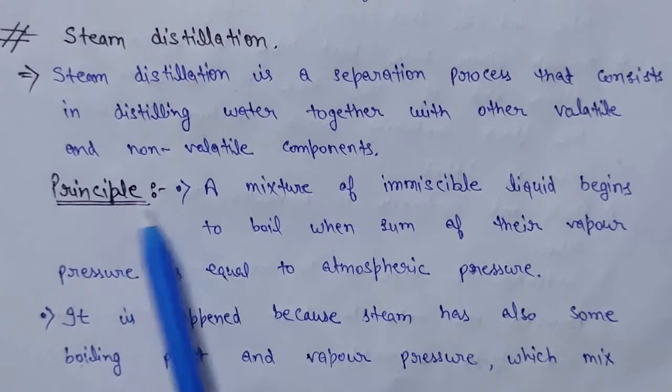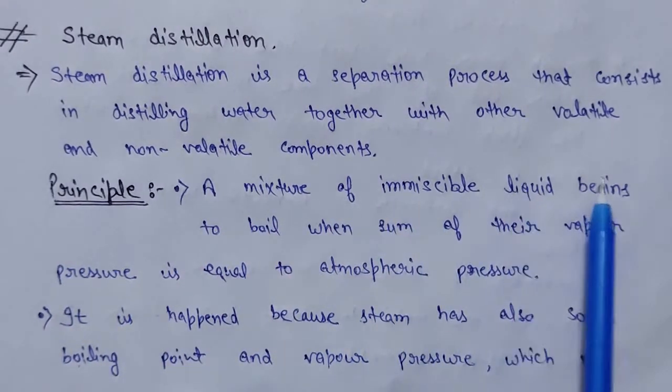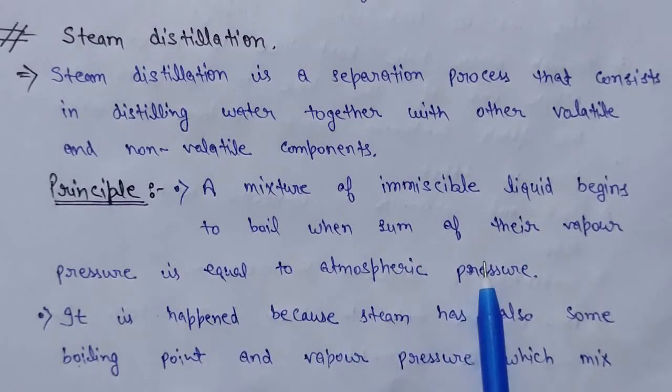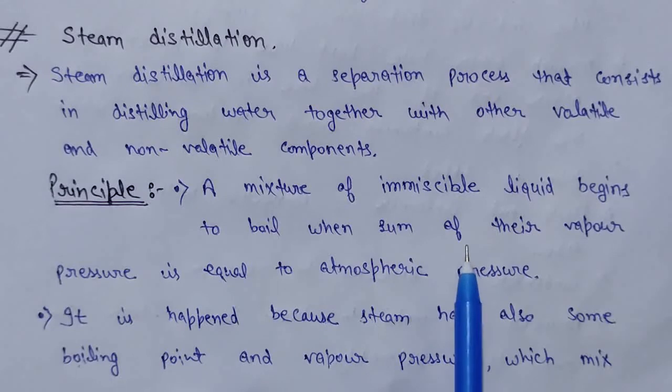So next, the principle: a mixture of immiscible liquid begins to boil when sum of their vapor pressure is equal to the atmospheric pressure. The principle is saying when the immiscible liquid is going to boil? When it comes to atmospheric pressure.